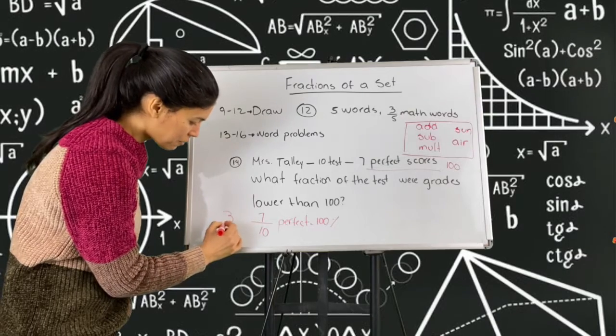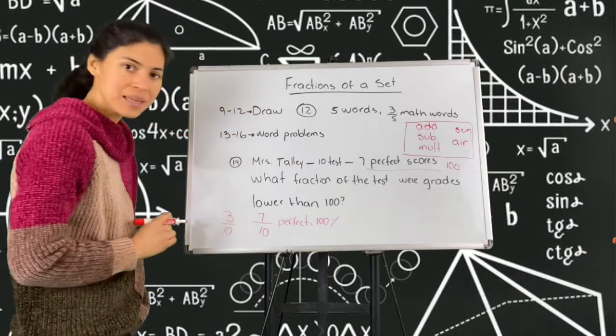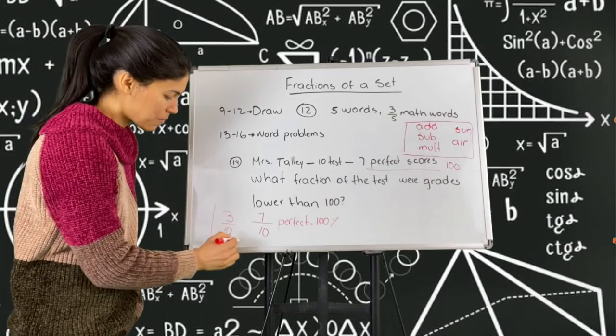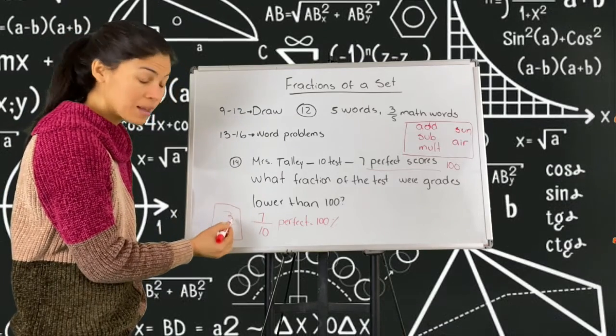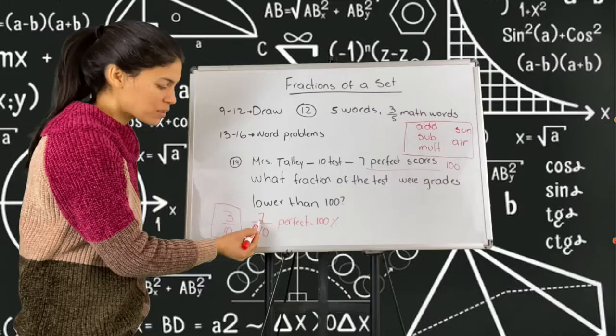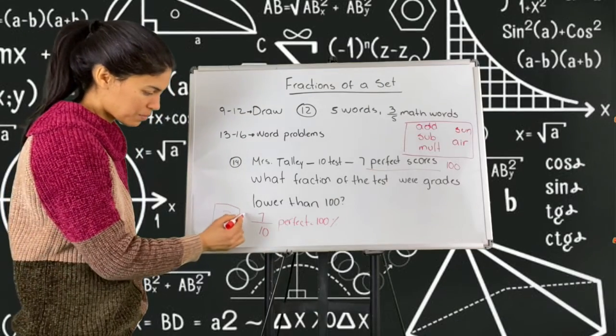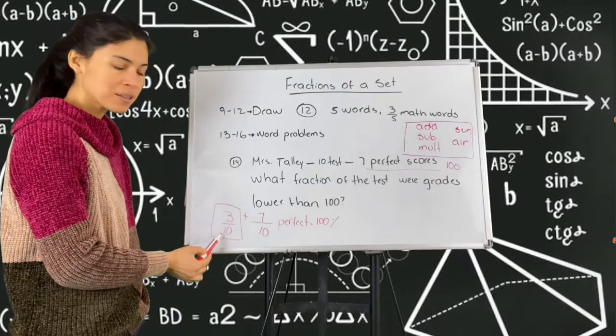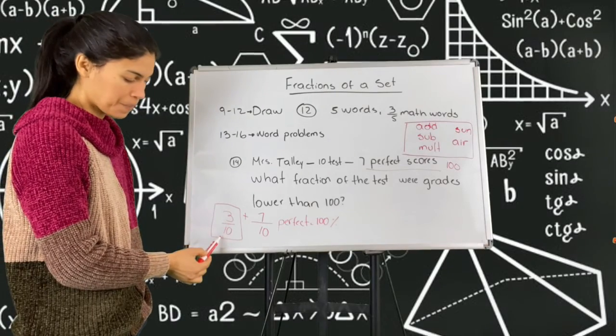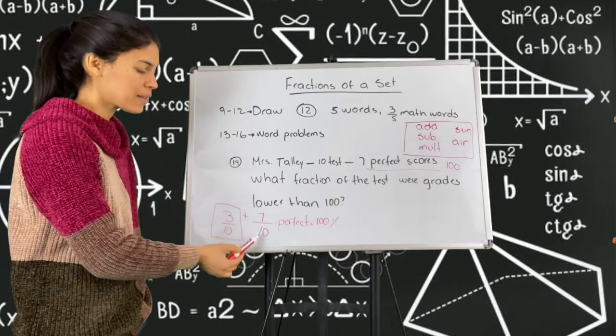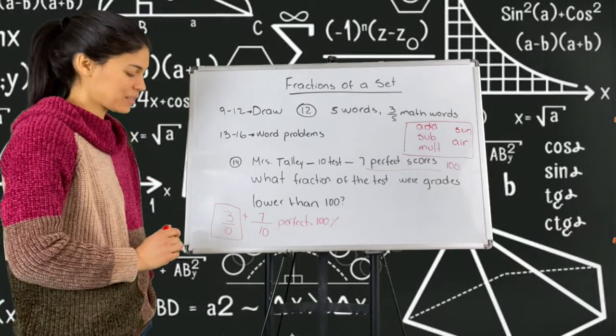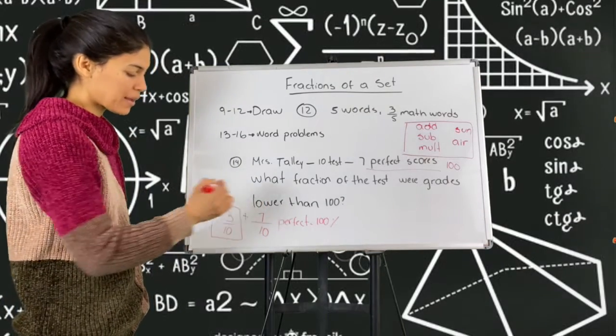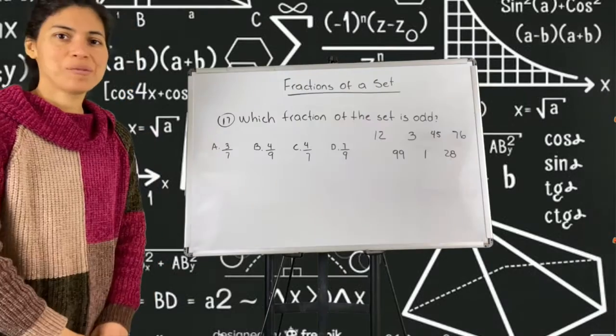Three out of 10 didn't make it to 100. So the three that are not 100 plus the seven that are perfect, three plus seven, that gives me my 10 tests. So three out of 10 are not perfect or lower than 100, and seven out of 10 are perfect. So this should be the answer to my question.